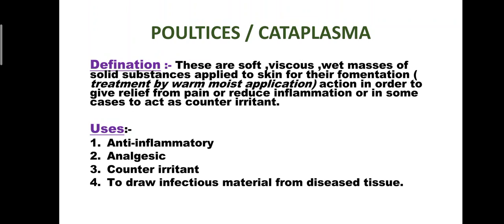Poultices (Cataplasma): definition. Poultices are soft, viscous, moist masses of solid substances applied to the skin for their fomentation action — that is, treatment by warm moist application — in order to give relief from pain, reduce inflammation, or in some cases act as a counter-irritant. Uses: anti-inflammatory agents, analgesics, counter-irritants, and to draw infectious material from diseased tissue.